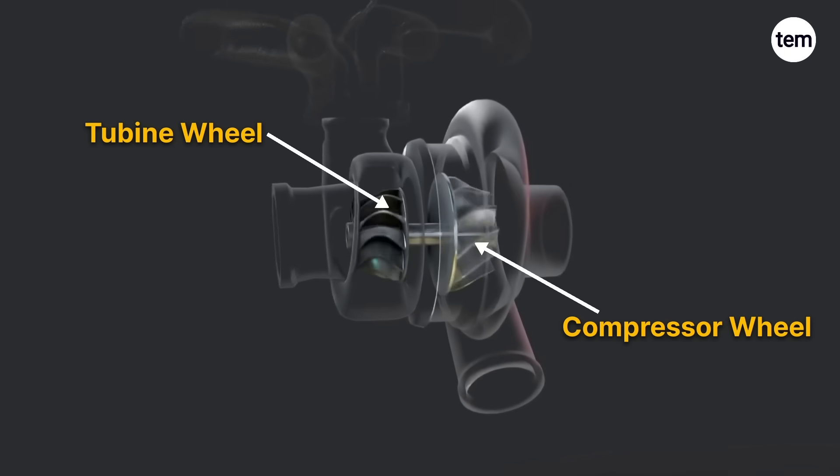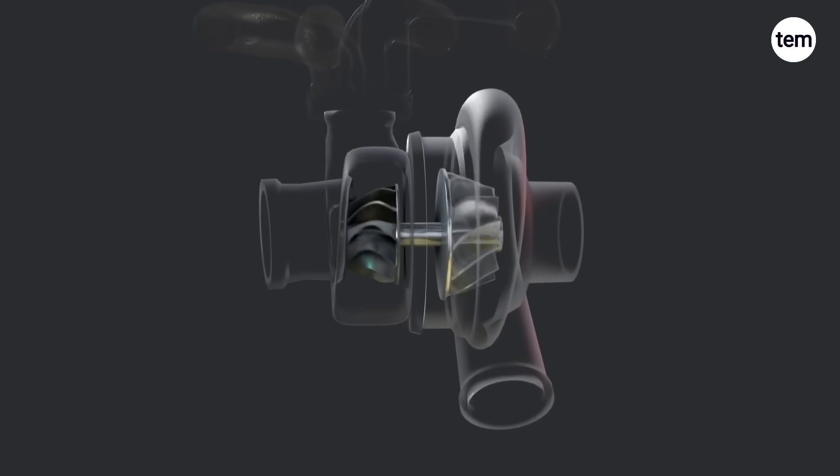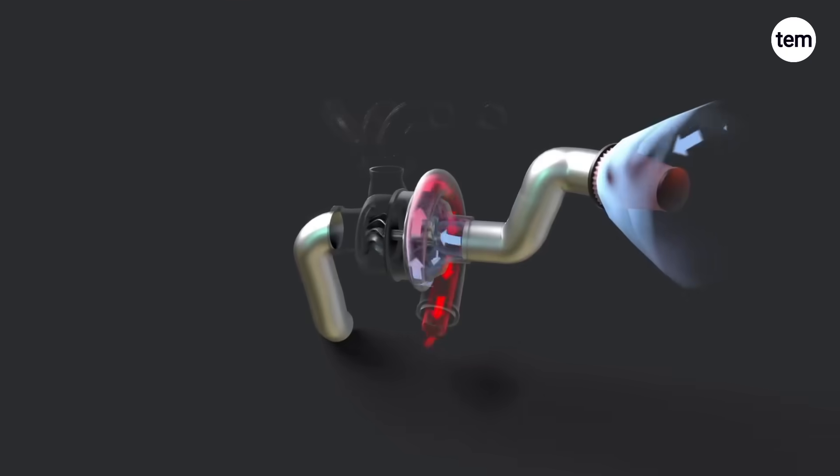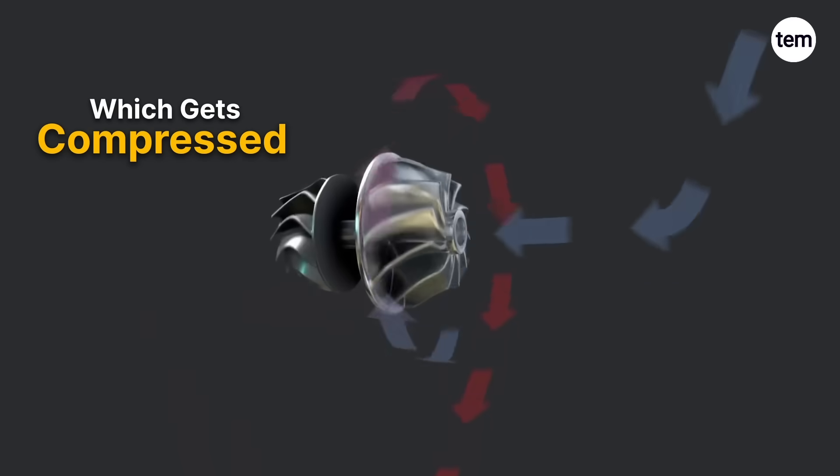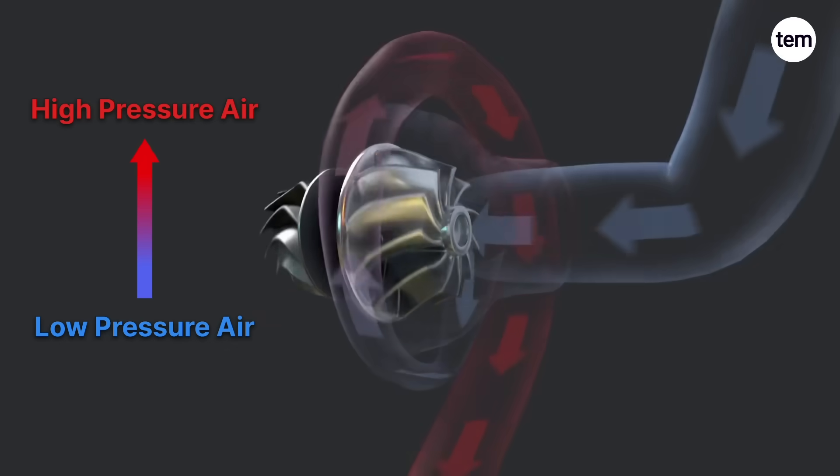Since the turbine wheel and compressor wheel are connected by the same shaft, the compressor wheel also begins to rotate simultaneously. As the compressor wheel spins, it draws in air from the atmosphere, which gets compressed and converts low-pressure air into high-pressure air.